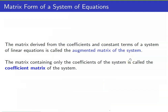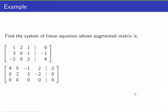Here is the definition of the augmented matrix and coefficient matrix. The matrix derived from the coefficients and constant terms of a system of linear equations is called the augmented matrix, and the matrix containing only the coefficients of the system is called the coefficient matrix. In this case, we say that the system of linear equations is written in its matrix form.